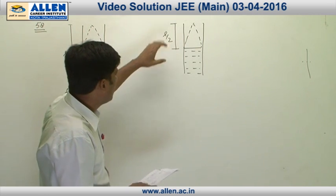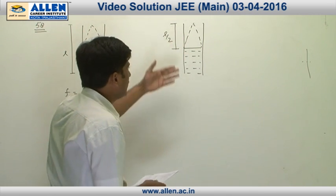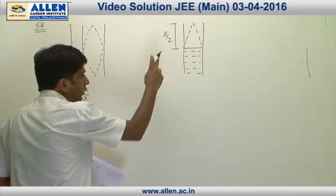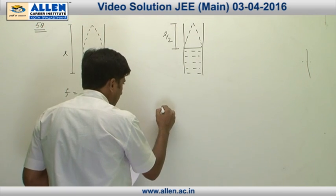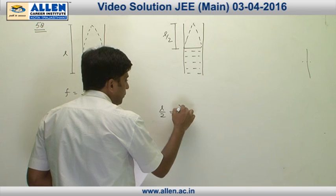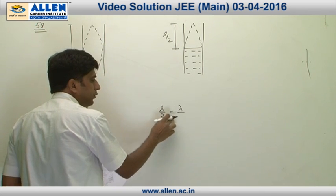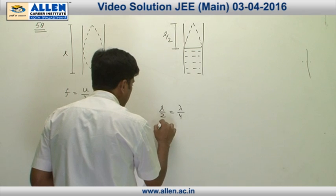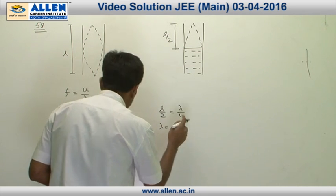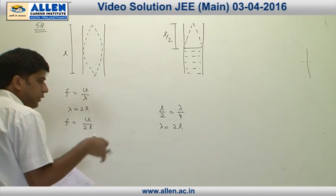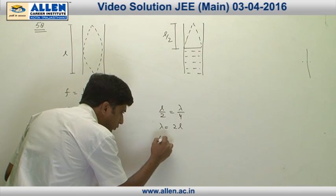If the wavelength of this wave is lambda, then we can say that l by 2 equals lambda by 4. Therefore, lambda equals 12, which is same as the previous case.